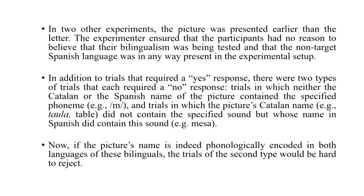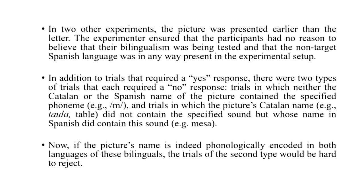For example, monitoring for the sound 'm', where you have to name pictures in Catalan, but the Catalan name 'taula' does not carry that sound, while the Spanish name 'misa' does carry the 'm' sound. These trials would be slightly harder to reject because of the co-activation of the translational equivalents of that concept. Both 'taula' and 'misa' are activated, and if participants are aware of that activation when doing the task, they will find it more difficult to reject the 'm' sound even though it is not present in the target 'taula'. So if the picture's name is phonologically encoded in both languages, the second type of 'no' trials would be harder to reject.